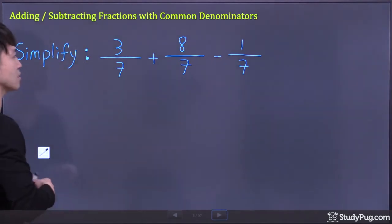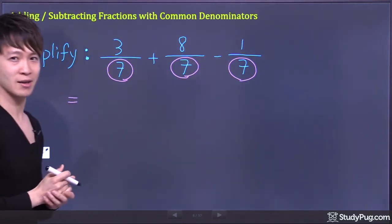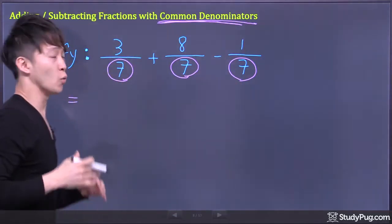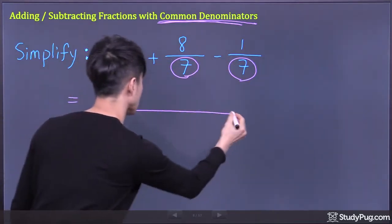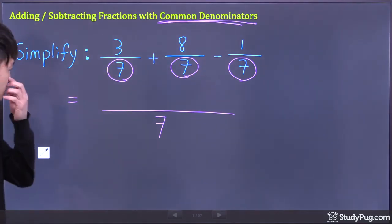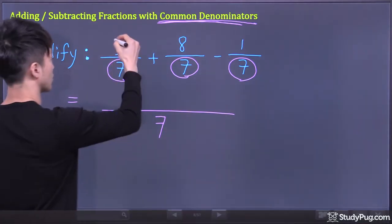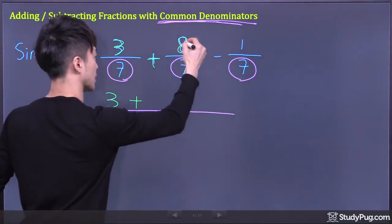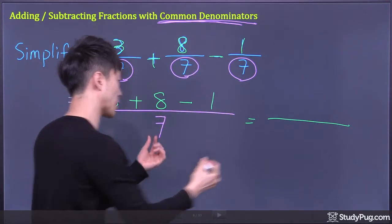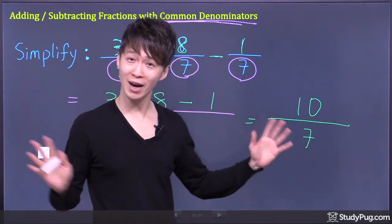Let's start with an easy example where we are adding and subtracting three fractions and they happen to have the same denominator. Now we know this is the easy case, because whenever we are adding and subtracting fractions with common denominators, we can simply combine all the fractions into one fraction with the common denominator — in this case, seven. For the numerators, all we have to do is combine all the numerators together. So we have three plus eight minus one. The denominator is seven, and three plus eight is eleven, minus one, we get ten. The answer is ten over seven.